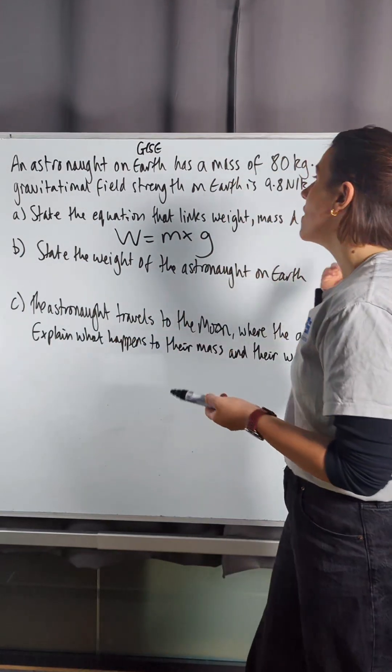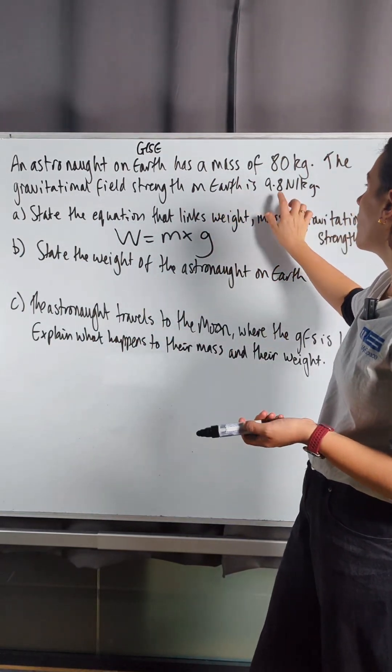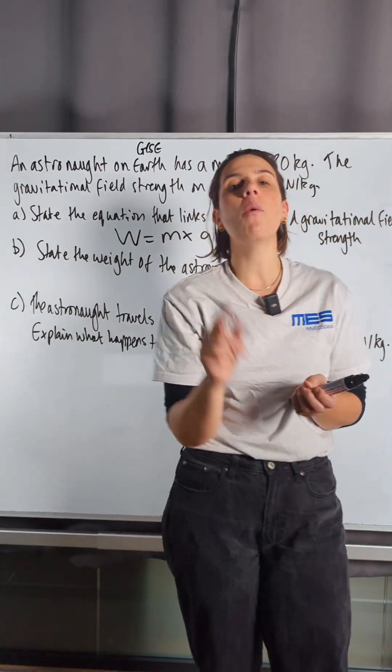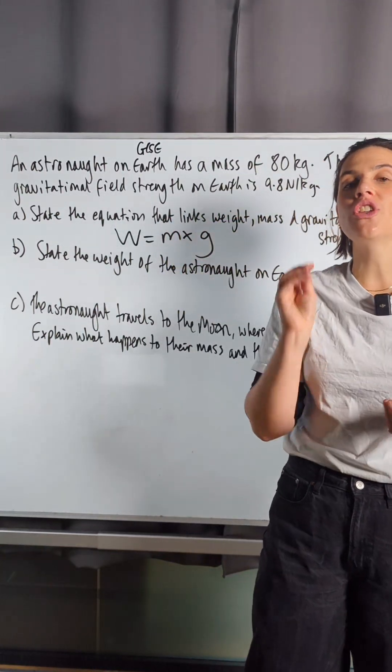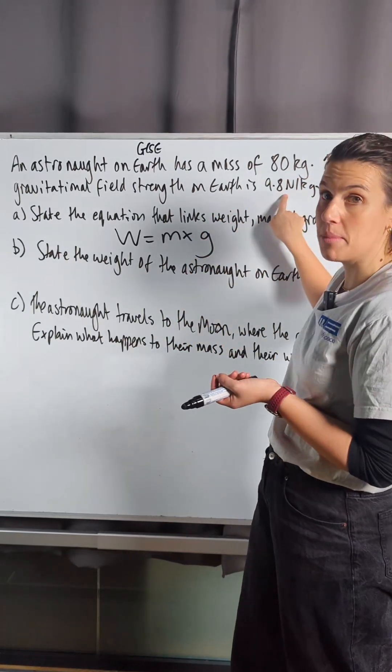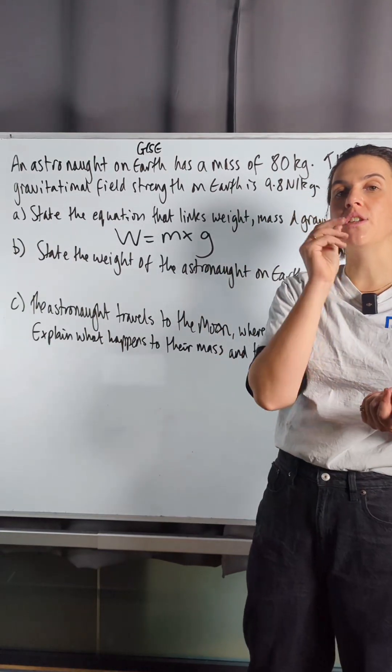Now, in this question they've actually given us gravitational field strength on Earth as 9.8 newtons per kilogram if you're doing AQA GCSE. However, the exam does not need to give you that number. You are expected to memorize this number, okay, and use it when you need to.